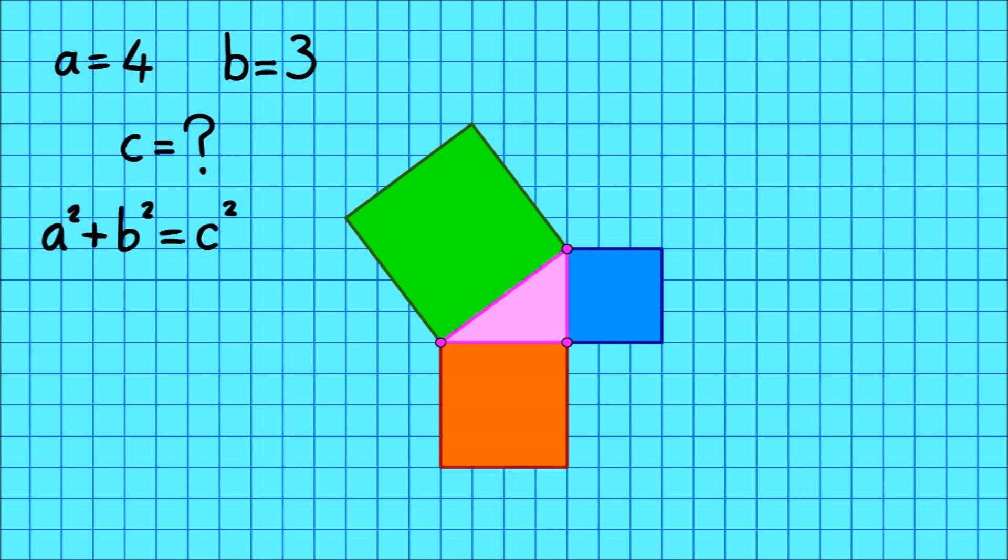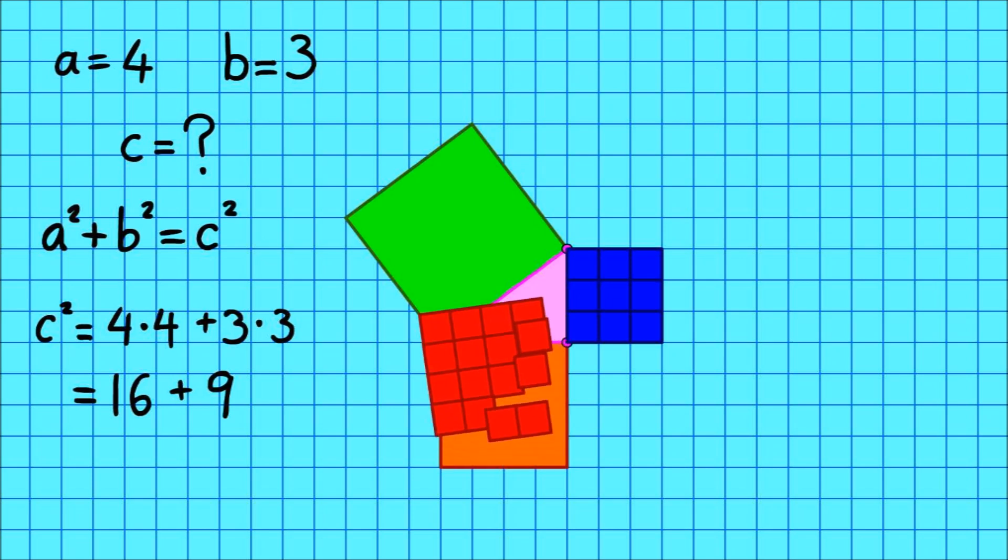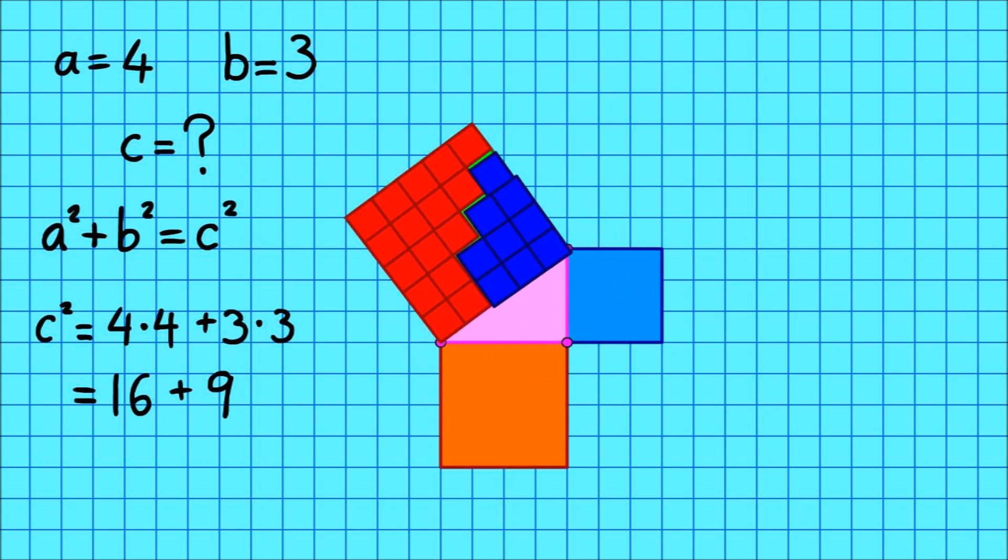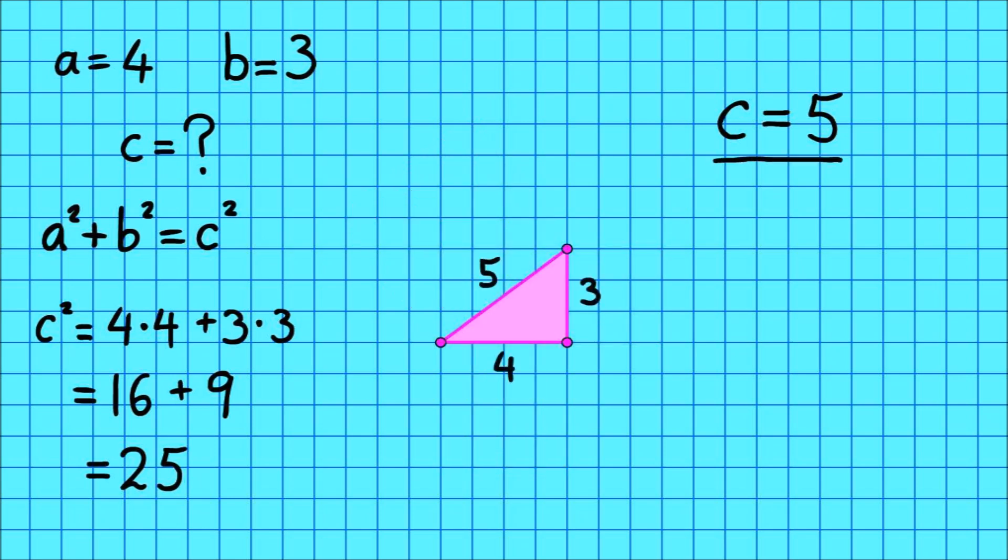Since A squared plus B squared equals C squared, we know that C squared is equal to 4 times 4 plus 3 times 3. That's 16 plus 9. That's 25. So C squared is equal to 25, and that means C must be 5. And that's the answer. We've gone five units from the origin.